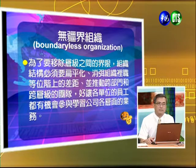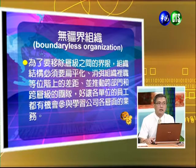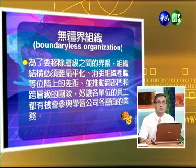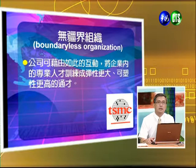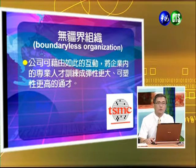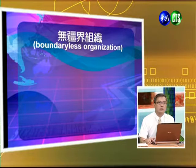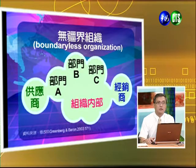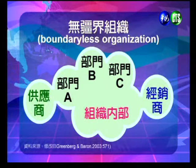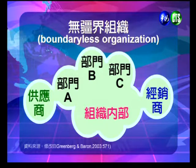第三種是無疆界的組織，希望能夠消除組織內部水平或垂直的界限，並破除公司上下游廠商之間的障礙，在允許範圍內打破公司內外的藩籬。為了移除層級之間的界限，組織結構必須扁平化，消弭組織之間的位階差異。同時推動跨部門及跨層級的團隊，讓各單位員工都有機會參與學習公司各層級的業務，也可以將企業內的專業人才訓練成彈性更大的通才。